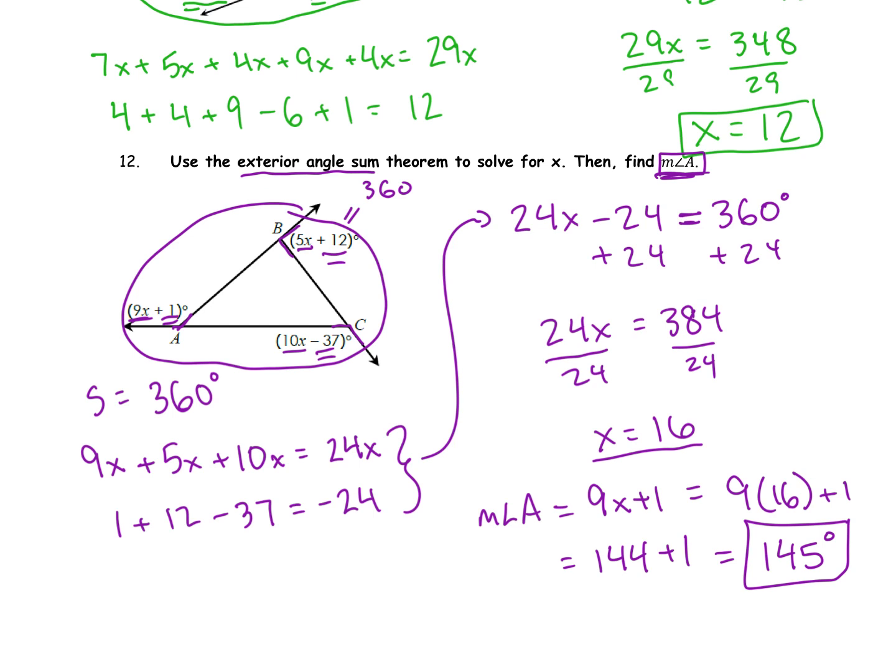I hope that made enough sense. It's really an easy theorem, an easy sum to use overall. Every exterior angle, when added together, should equal 360 degrees. So we just add everything together, set it equal to 360, and solve from there. If need be, we can plug in the value of x to find a specific angle measure. If you have any questions, please make sure that you're reaching out to me or your local geometry teacher. We're always hoping that you have a great day and easy math.